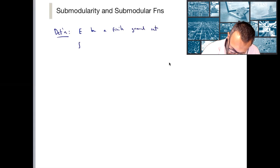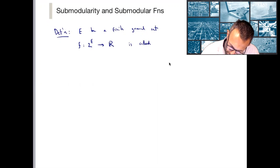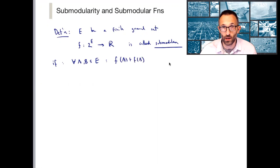And the basic definition says the following. If f is a function from subsets of E, then it's called Submodular if the following key property holds. For any two subsets A and B of E, f of A plus f of B is lower bounded by the value of the union plus the value of the intersection.